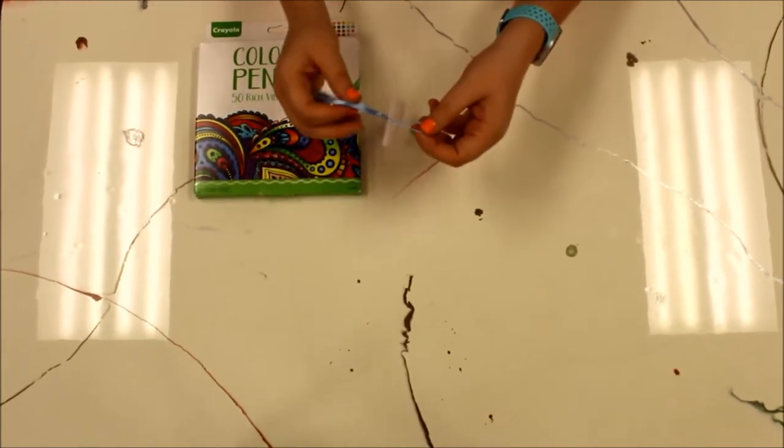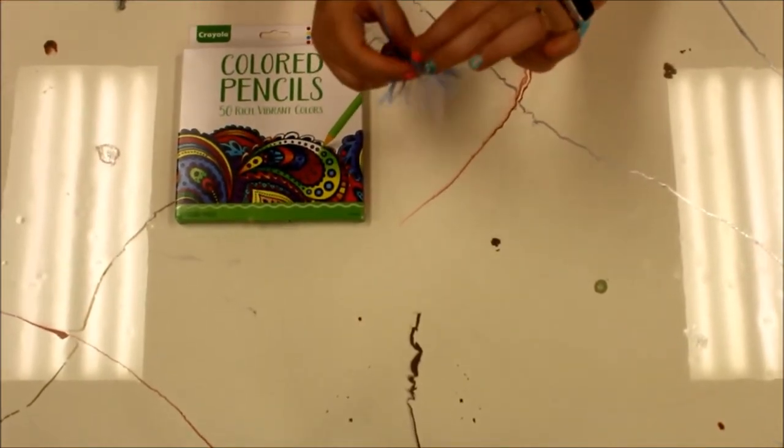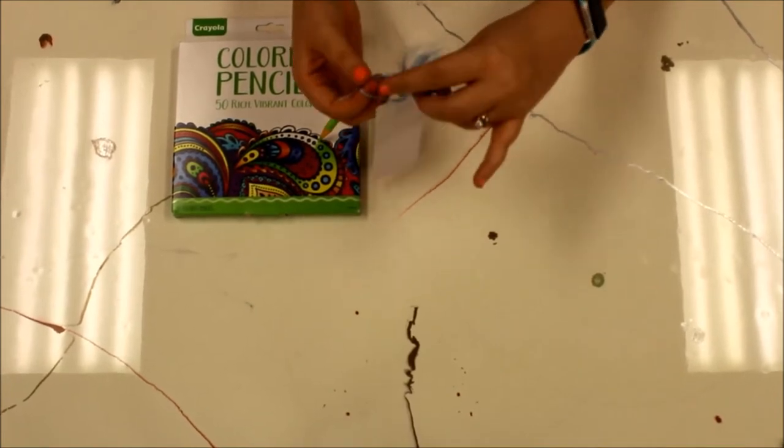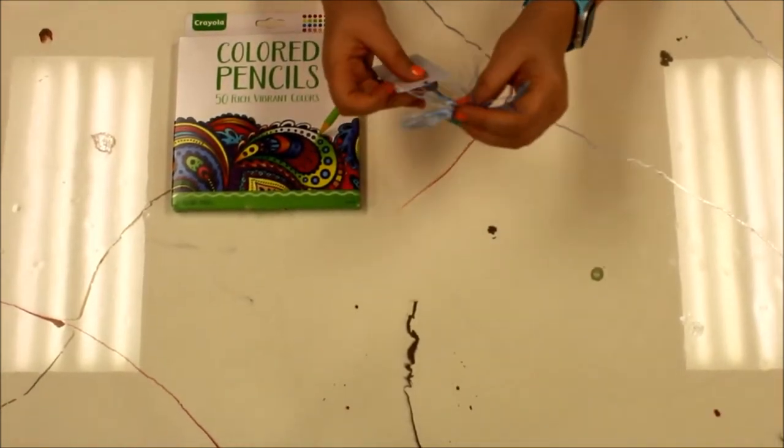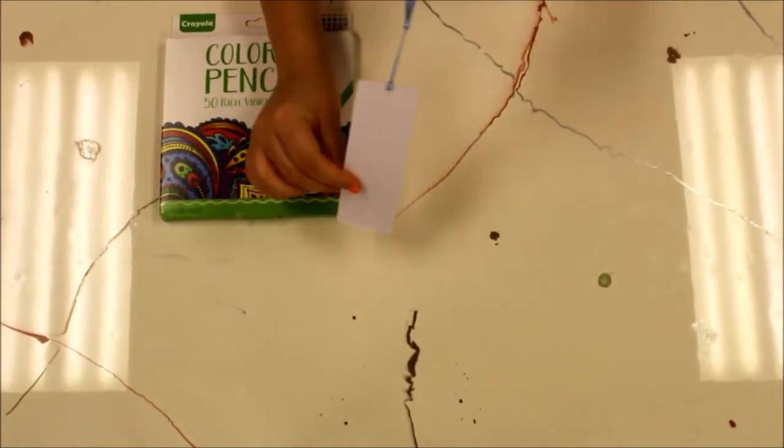and then once you get it through, you're going to take it and see this loop right here, you're going to pull the tassel through it. And then pull it tight and that secures it on your bookmark.